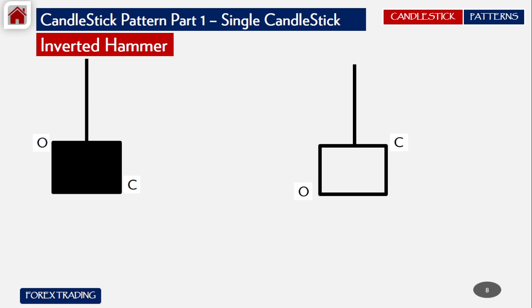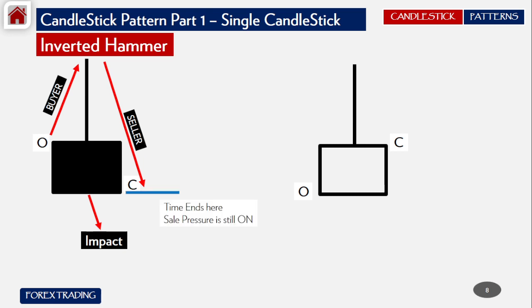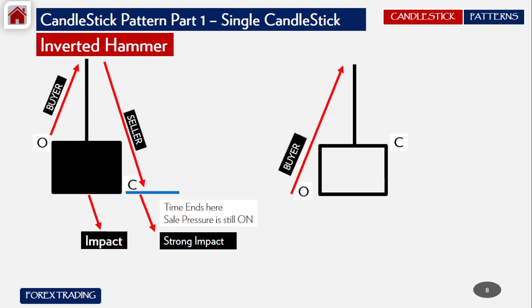Now we have the Inverted Hammer, which is the reverse of the hammer. The body is at the bottom and the wick is on the upper side. When the price opens, the buyer takes it to the upper level of the wick, then the seller brings the price down to the closing level. The selling pressure is still on and we call it a strong impact.